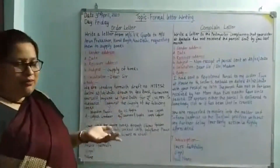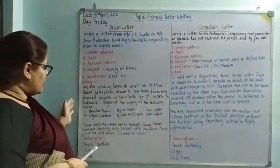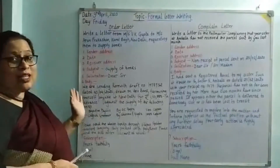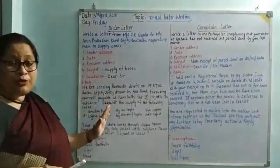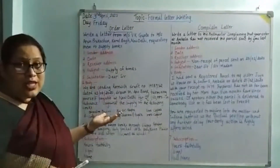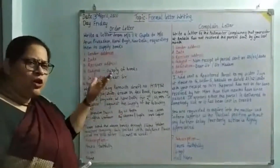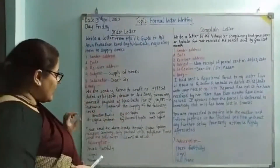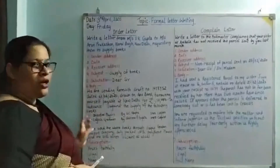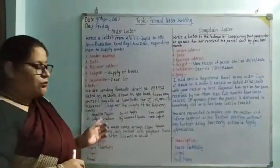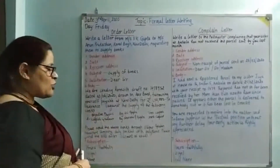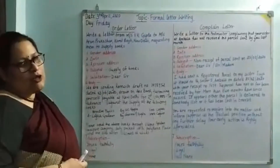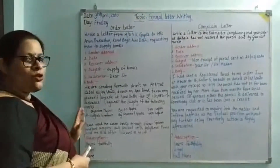The body consists of two paragraphs. The first talks about how much amount you will be transferring, via which DD or demand draft, which books you require, and how many copies. The second paragraph covers the conclusion part, followed by the subscription — that is the closing — and your signature.